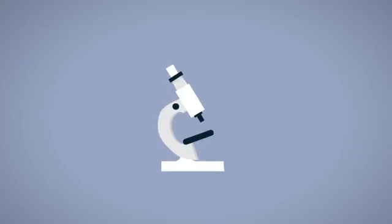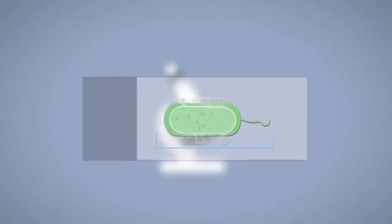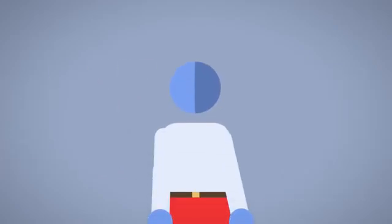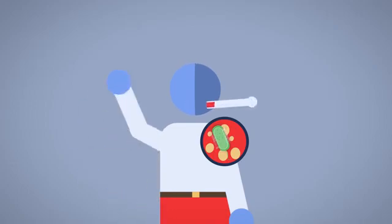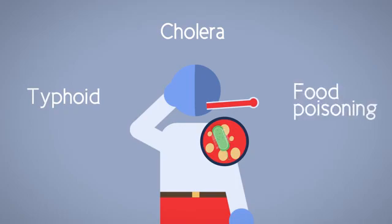Bacteria are microscopic, even the biggest are only 10 micrometers long, which is minuscule. Once bacteria find their way into the body, they release toxins that make us feel ill. Examples of bacterial infections are cholera, typhoid, food poisoning and gonorrhea.